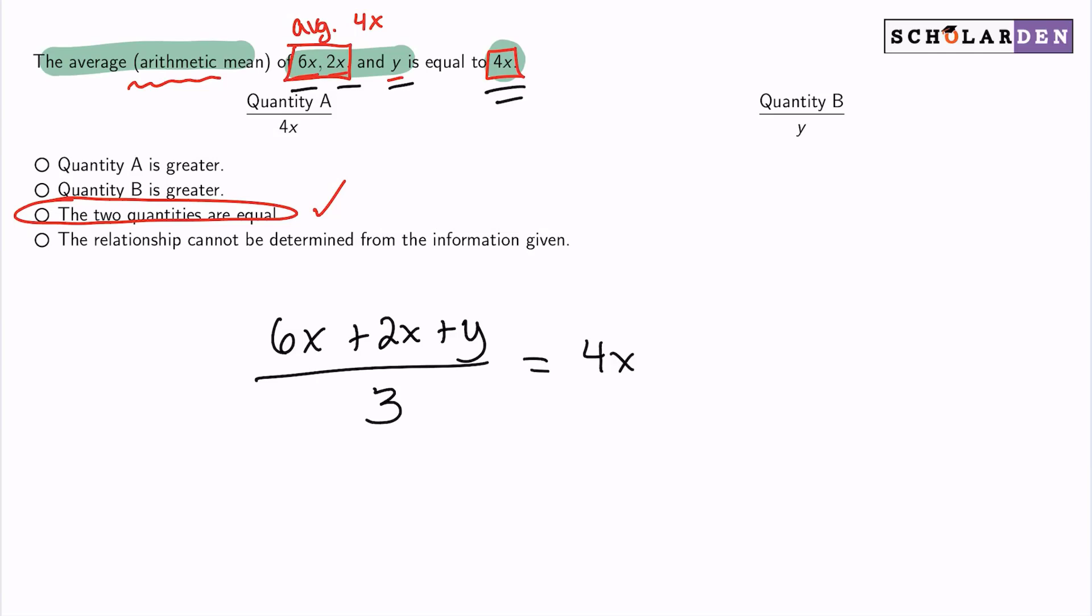So what I want to do is I want to see what y is in terms of x. So with that said, what I'll do is I'll begin by multiplying both sides by three because that'll allow me to rid the three denominator on the left side. Goodbye. Leaving us with 6x plus 2x plus y equals 4x multiplied by three, giving us 12x.